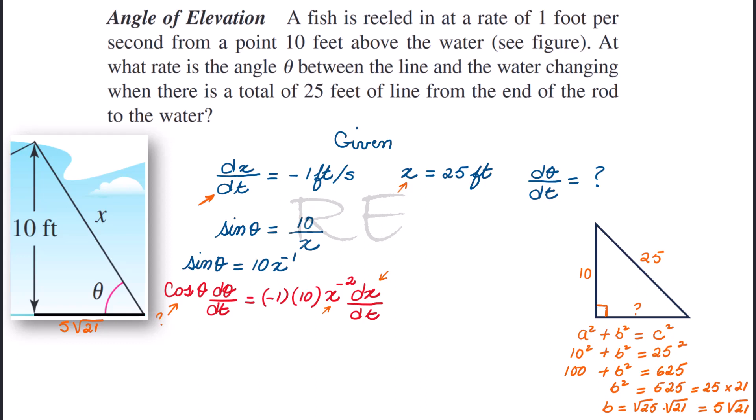So now this is the adjacent side. We can calculate cosine theta. Cosine theta is adjacent over hypotenuse. Therefore, cosine theta equals 5 square root of 21 divided by 25, which simplifies to square root of 21 over 5.